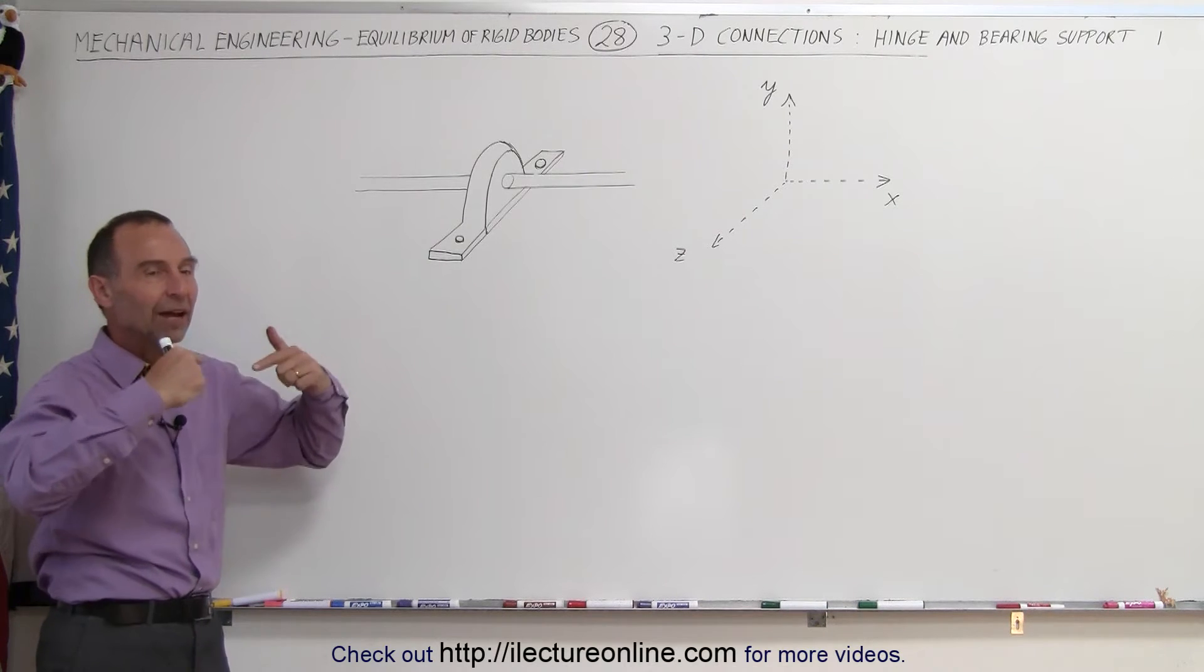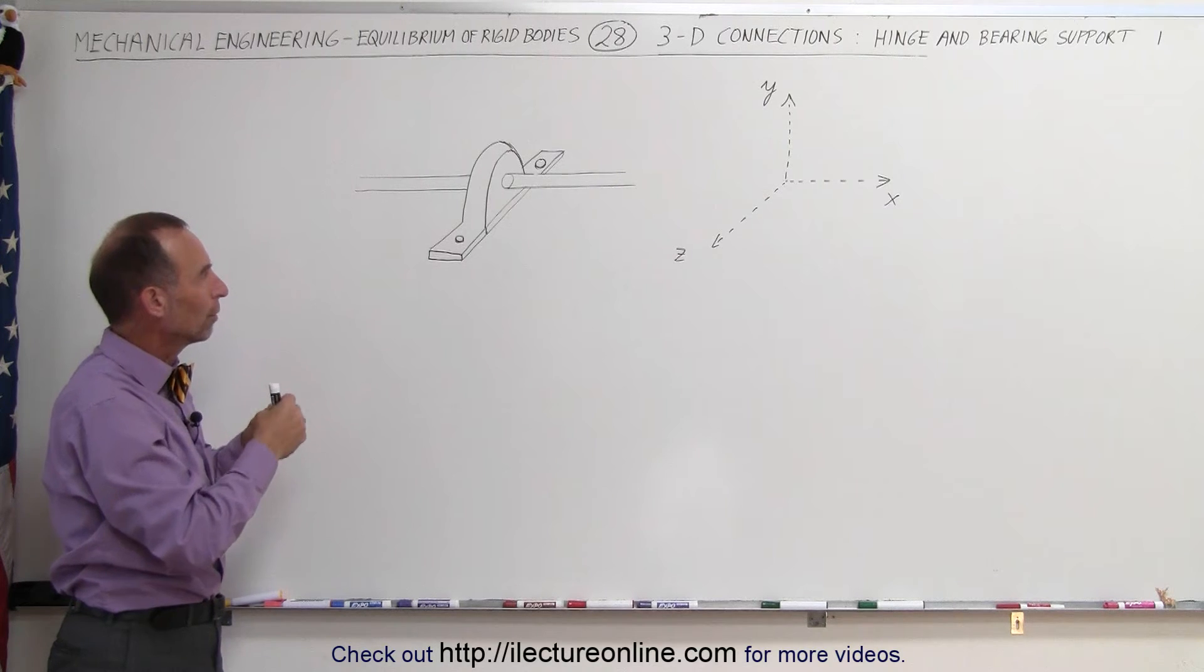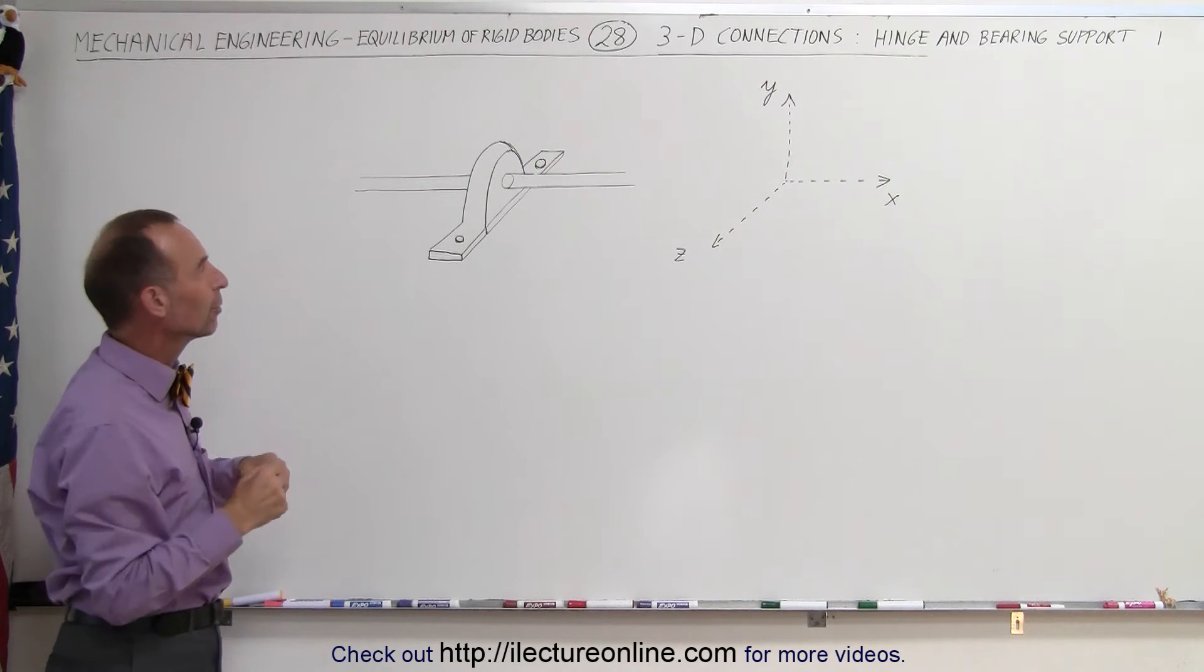So here we have a shaft that's fixed inside what we call a hinge or a bearing support. It's usually supported by bearings so it can roll freely without too much friction.